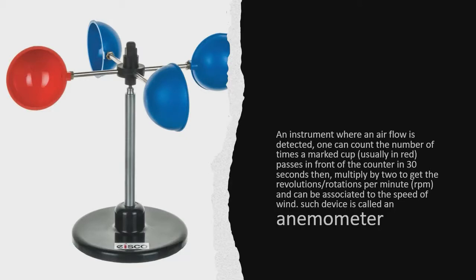An instrument where airflow is detected. One can count the number of times a marked cup, usually in red, passes in front of the counter in 30 seconds, then multiply by two to get the revolutions or rotations per minute, which can be associated with the speed of wind. Such device is called an anemometer.